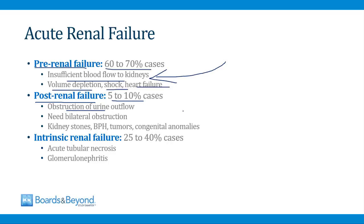To develop renal failure from an obstruction to urinary outflow, you need to have bilateral obstruction. If just one kidney is obstructed, the other kidney will handle the load and the BUN and creatinine usually do not rise. Things that can obstruct the outflow of both kidneys include kidney stones that find their way into the bladder, prostatic hypertrophy in men, tumors, and congenital anomalies. The most common reason is because a patient is unable to void, causing urine to back up into the kidneys.